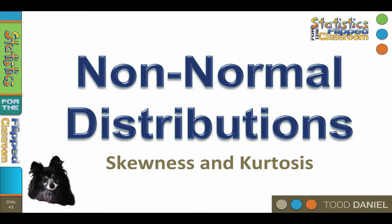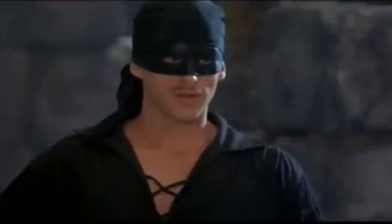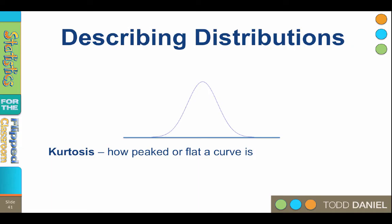Now that I have explained the ubiquity of the normal distribution and its regular appearance in human measurements, you may begin to hope or even expect that all of the distributions we will encounter will be normal curves. But if that is your expectation, you will have to get used to disappointment — Princess Bride reference there. Because many curves, perhaps most curves, are not normal distributions, we need a way to talk about the shape of distributions when they differ from normality.